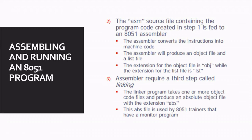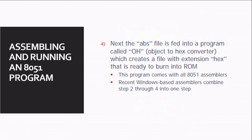The last step is that the ABS file is fed into a program called the object-to-hex converter. It converts the ABS file into a hex file with the .hex extension. The hex file is particularly compatible with the 8051. This program comes with all 8051 assemblers, and most recent Windows-based assemblers also combine step 2 and step 4 into one step.